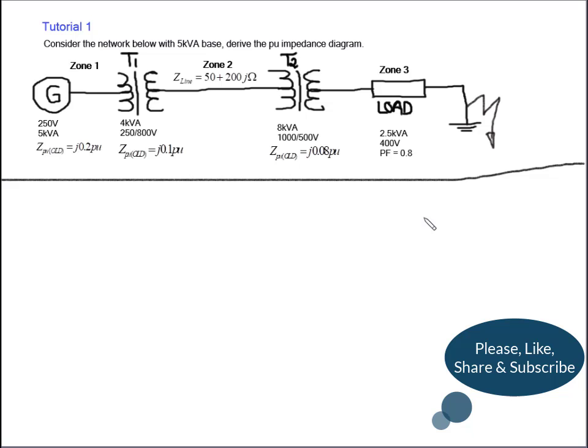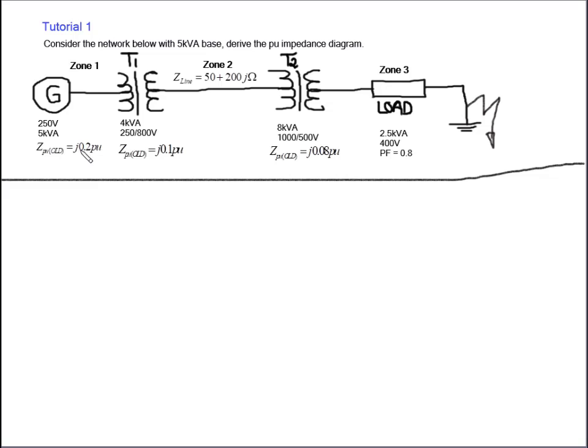So solving for zone one, what do we have for zone one? We got a 250 volt and a 5 kVA generator. Now, since we are looking for the new per unit value for the generator, there is a general formula that is used to calculate the per unit of an electrical element on the network, which is given by the following formula: the Z per unit new that we're calculating is equal to the Z per unit old (in this case for the generator it's going to be 0.2 per unit) times SBN, which is SB new, so that's the apparent power, the new that is given here for our network as a base voltage. So I mean the base MVA, 5 kVA.